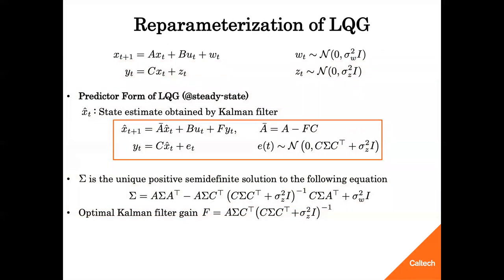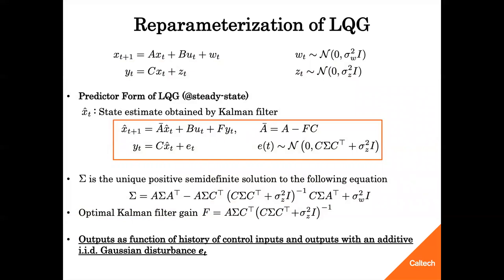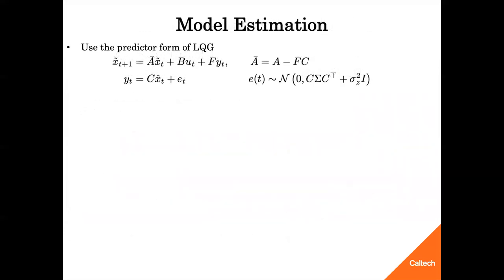Our identification algorithm exploits the reparametrization of LQG, which goes back to Kalman. The state-space form of LQG can be written in another representation called predictive form. At steady state, XF denotes the state estimate obtained by Kalman filter. A-bar is the difference between A and F times C, where F denotes the optimal Kalman filter gain. A-bar is now the state evolution matrix. The output Y can again be written as a noisy version of new state variable XF. At steady state, the noise ET on Y is an IID Gaussian disturbance with a fixed covariance matrix. Notice that sigma in the covariance matrix comes from a solution of Riccati equation as shown. This representation allows something that the previous state-space representation does not. We can write every output as a linear function of history of control input Us and output Ys with an additive IID Gaussian disturbance ET.